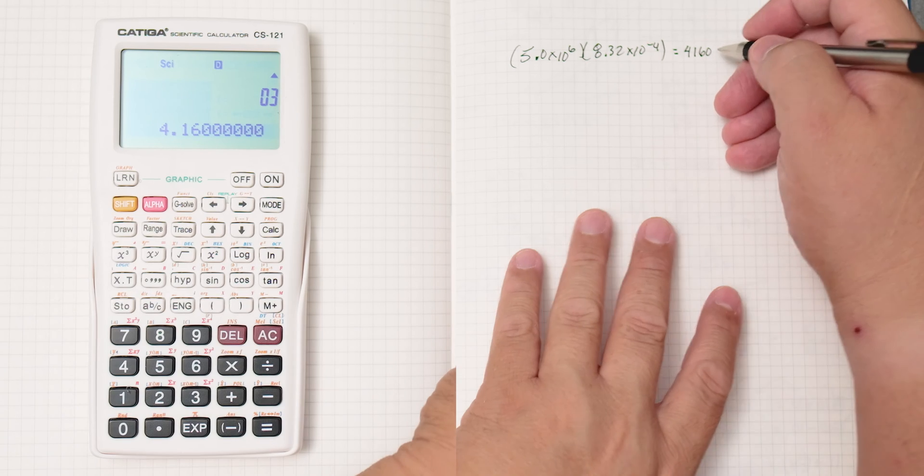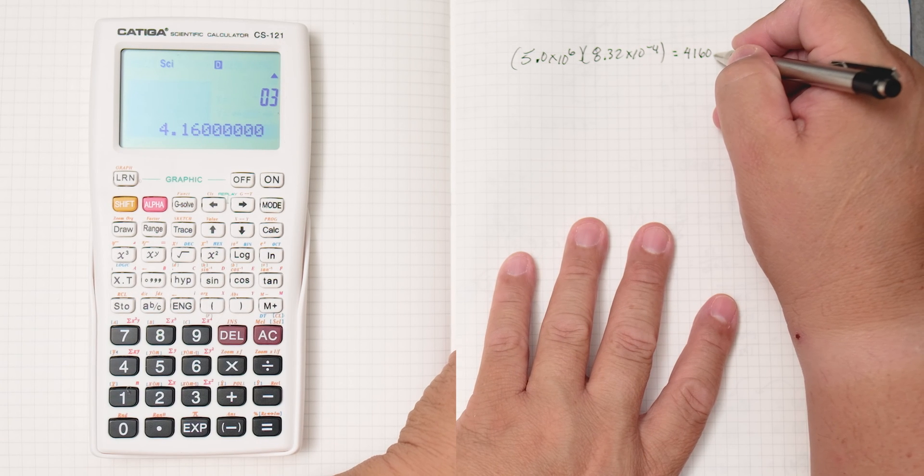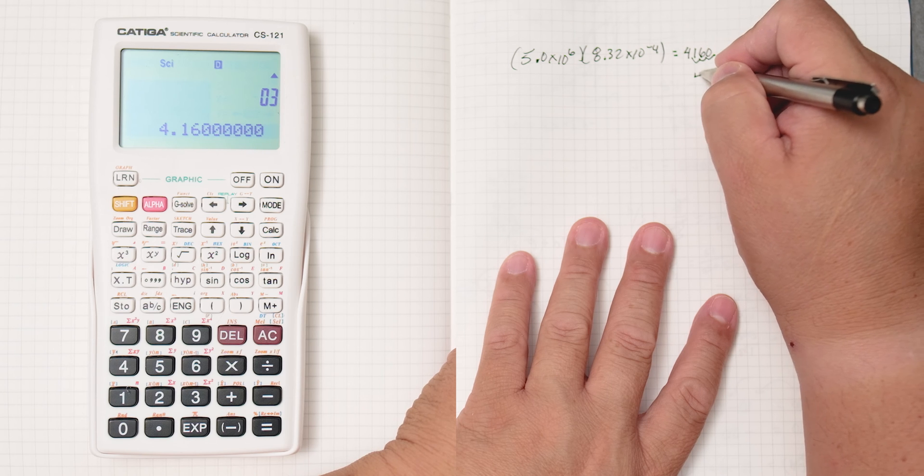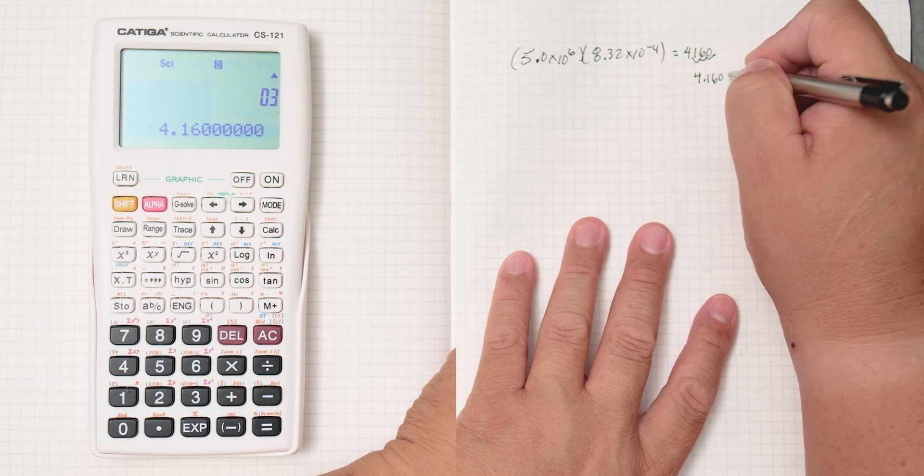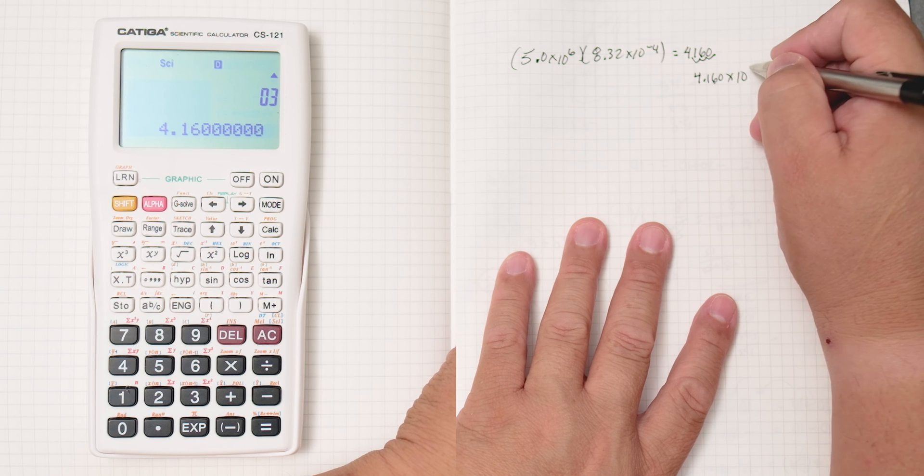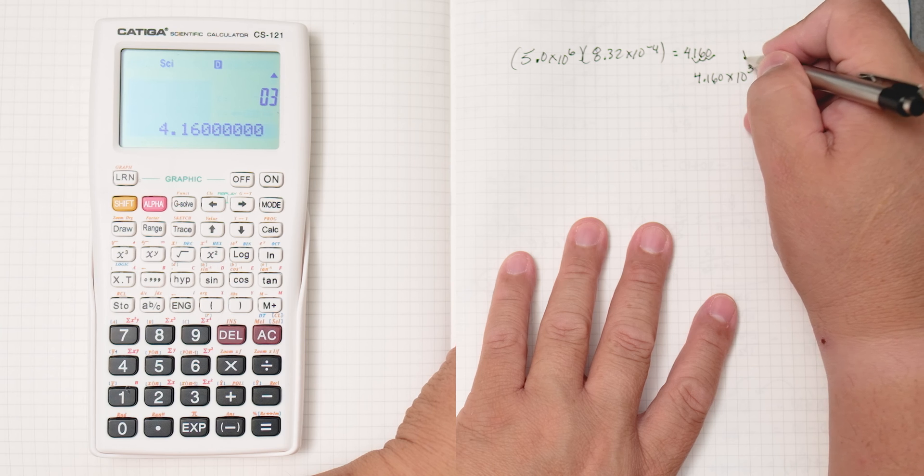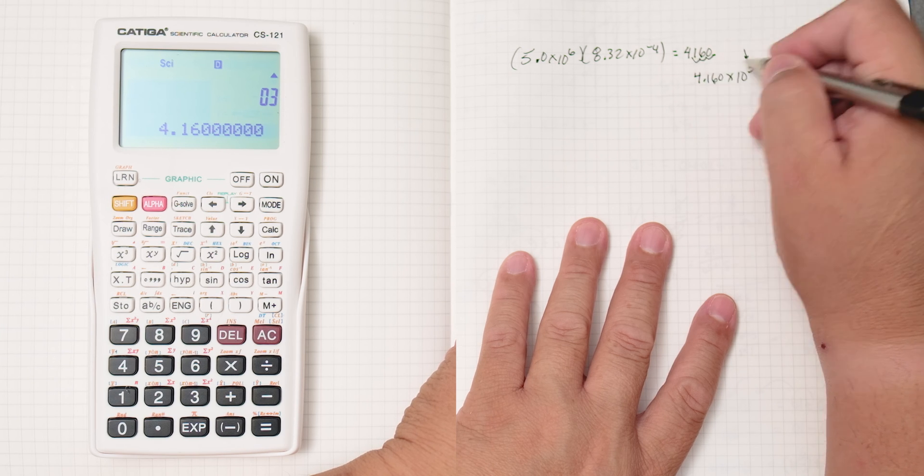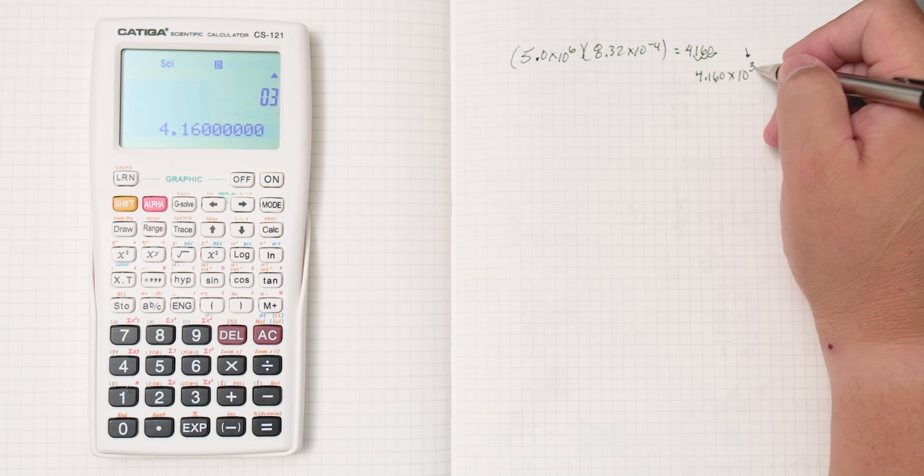Which is this right here. So the decimal places right here, and I'm going to make this number smaller, 1, 2, 3, 4.160 times 10. If I'm making this smaller, I'm going to make this number bigger, the exponent. So I'm moving the decimals 1, 2, 3 places, and that gives me the 3 here.